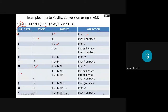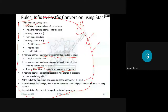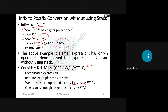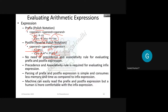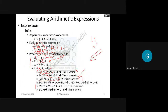In general: if the symbol is an operand, print it. If it is an operator with higher precedence than the stack top, push it. If the operator has lower precedence, pop and print the top, then compare again. If the operator has equal precedence, apply the associativity rule — either left-to-right or right-to-left depending on the operator.